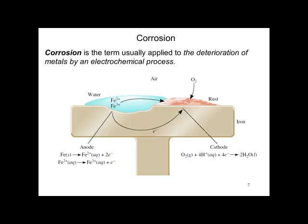Corrosion is a term usually applied to the deterioration of metal by an electrochemical process. It's a multi-billion dollar problem worldwide. Here is an iron nail. At the anode, the iron becomes iron 2+, and the iron 2+ becomes iron 3+. So it is being oxidized to the oxide, which is rust. The cathode, we have the oxygen being reduced.